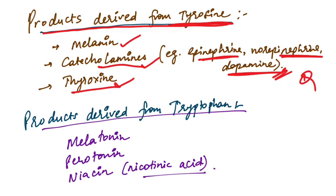Products derived from tryptophan include melatonin, serotonin, and nicotinic acid.